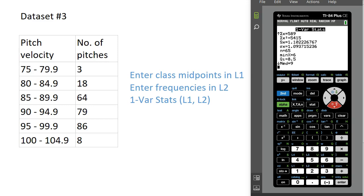Notice there were three pitches thrown in this game that had a velocity between 75 and 79.9, those would be your slow curveballs. Then there were 18 pitches thrown between 80 and 84.9 miles per hour, and so on.